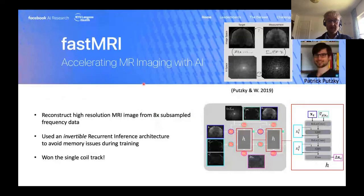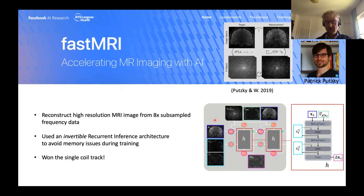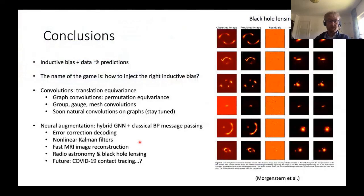We also applied this to fast MRI — not a graph but an image — using the same philosophy for iterative image reconstruction, done with Patrick Putzky. We submitted this to the fastMRI challenge organized by Facebook and NYU, and we actually won in the single-coil track. We had some extra innovations like making the network invertible to solve memory issues, but the overall philosophy of the hybrid idea worked out really well also in this real-world problem.